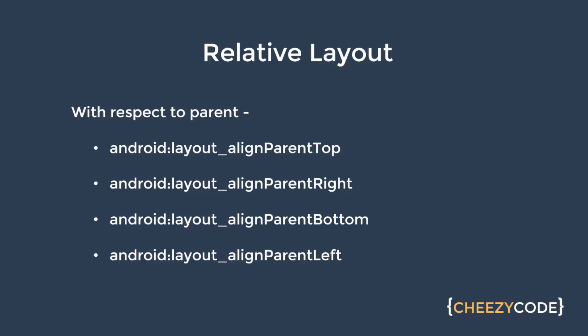As we saw, views can be placed relative to the parent. These are the attributes we can specify to arrange views relative to the parent. These attributes accept true or false as a value, and according to that the Android engine renders the view. For example, align parent top — if we specify true, the top edge of the child view will be aligned with the top edge of the parent container. Similarly, align parent right aligns the right edge of the view with the right edge of the parent container.